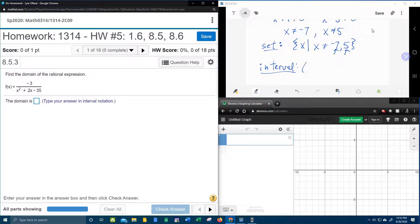So we're going to say that x can be anything from minus infinity up to negative 7. And then we're going to jump over negative 7 and keep going to 5. And then we're going to jump over 5 and go to infinity.